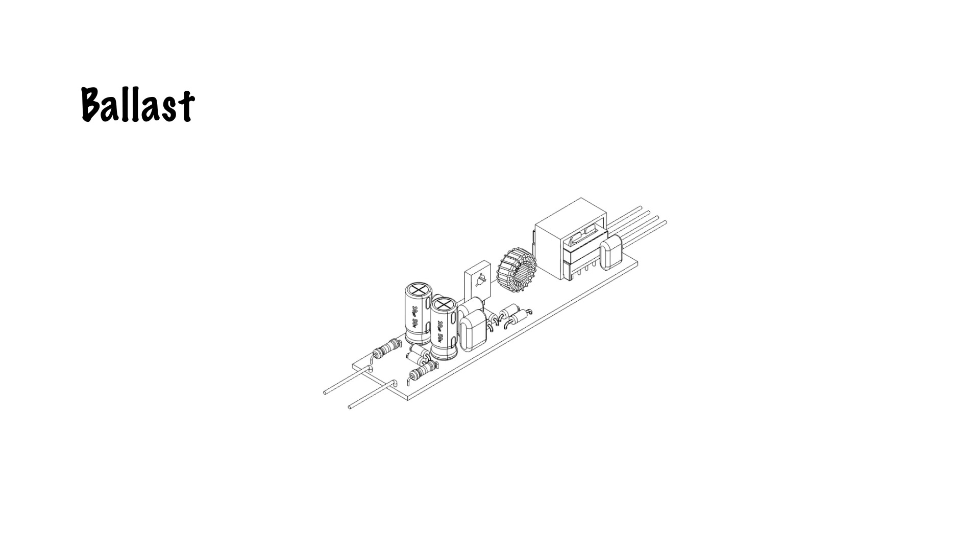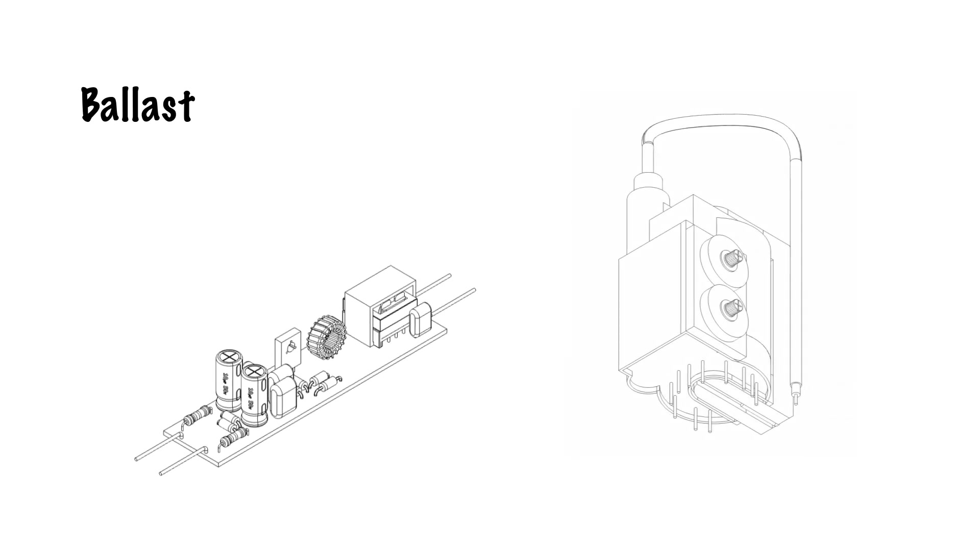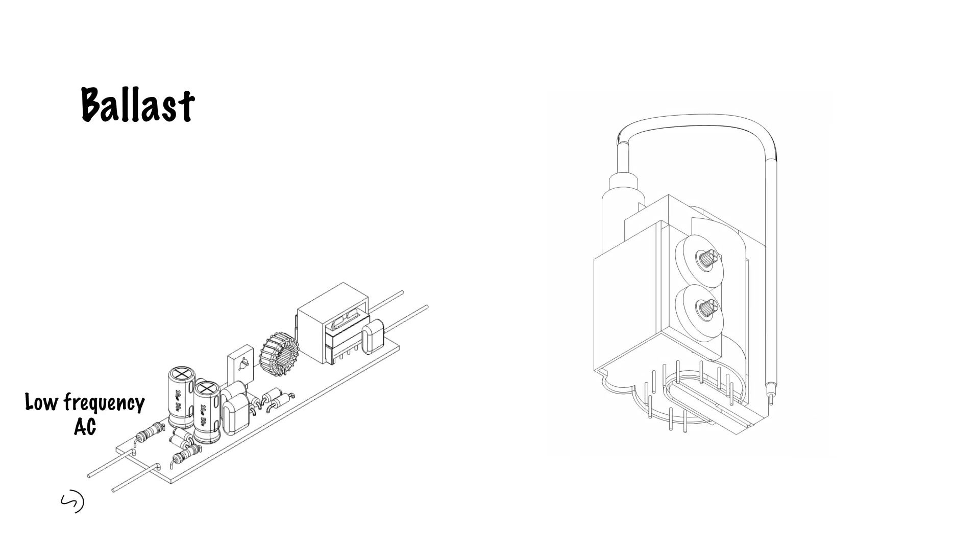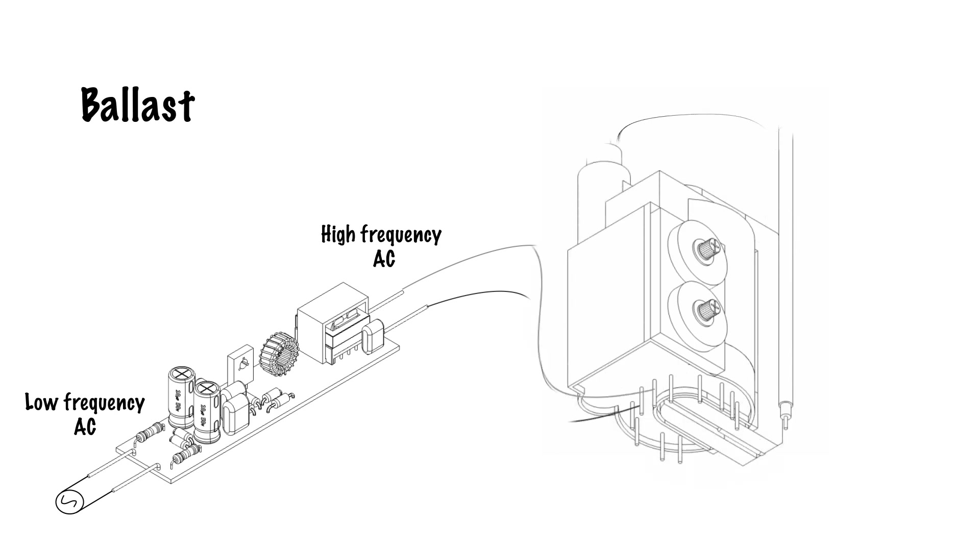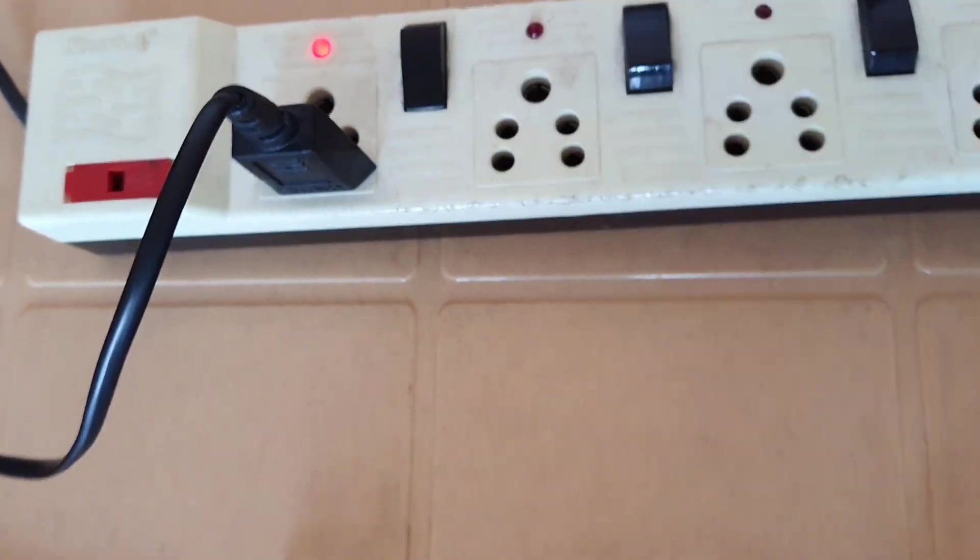We also discovered a more suitable off-the-shelf driver for the transformer called a ballast. Ballasts are commonly used in tube lights to excite the gas within the tube. They convert low-frequency AC supply into high-frequency AC output. This high-frequency AC can then be fed into the primary coil of the transformer, resulting in generation of high-voltage DC arcs. After a few trials of finding the primary coil pins, we were able to get some beautiful arcs out of the transformer.